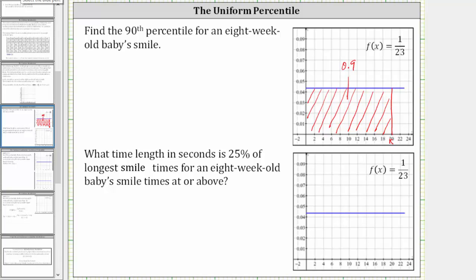So we can say the probability that X is less than k must equal the area of the red rectangle, which is 0.9. We know the area of a rectangle equals base times height. The base has a length of k units, or k minus 0, and the height equals the function value of 1/23. Therefore the area of the red rectangle equals k times 1/23, and this must equal 0.9.